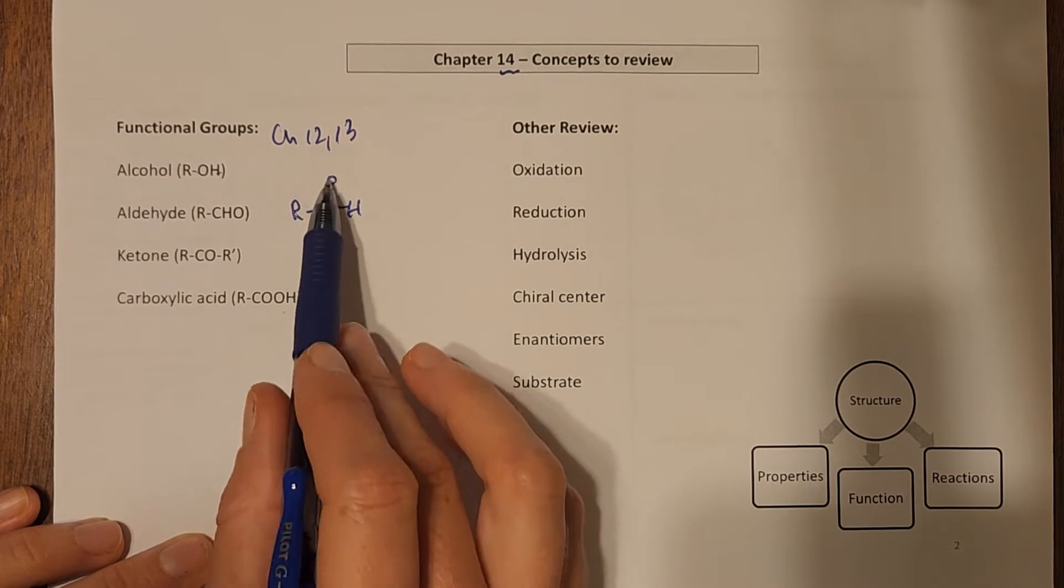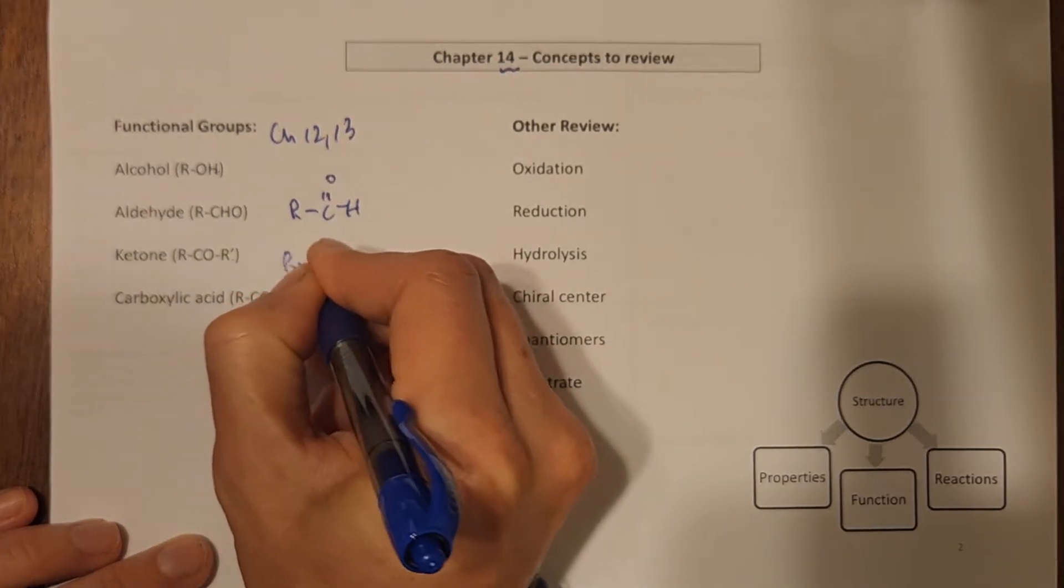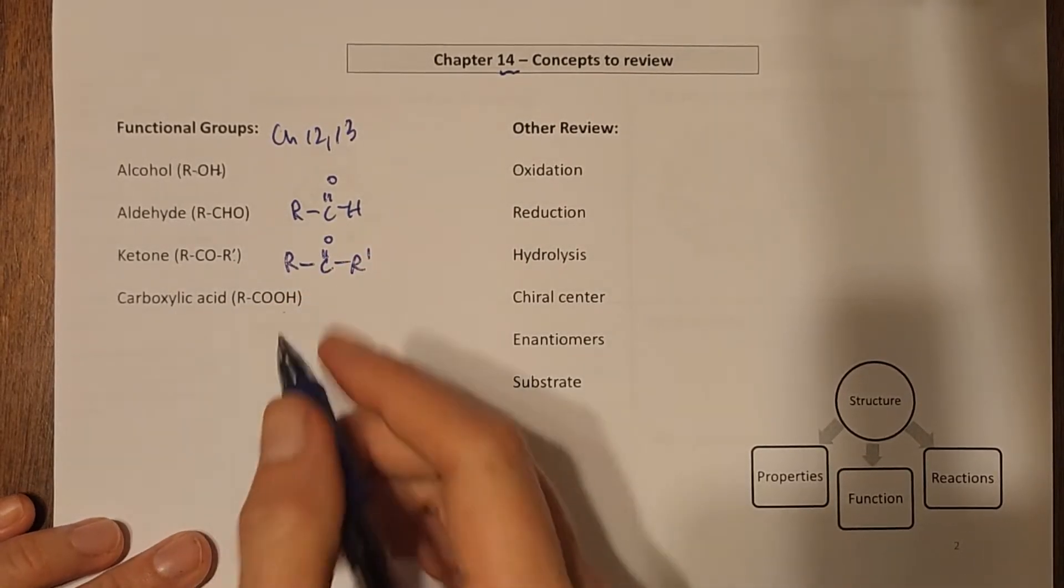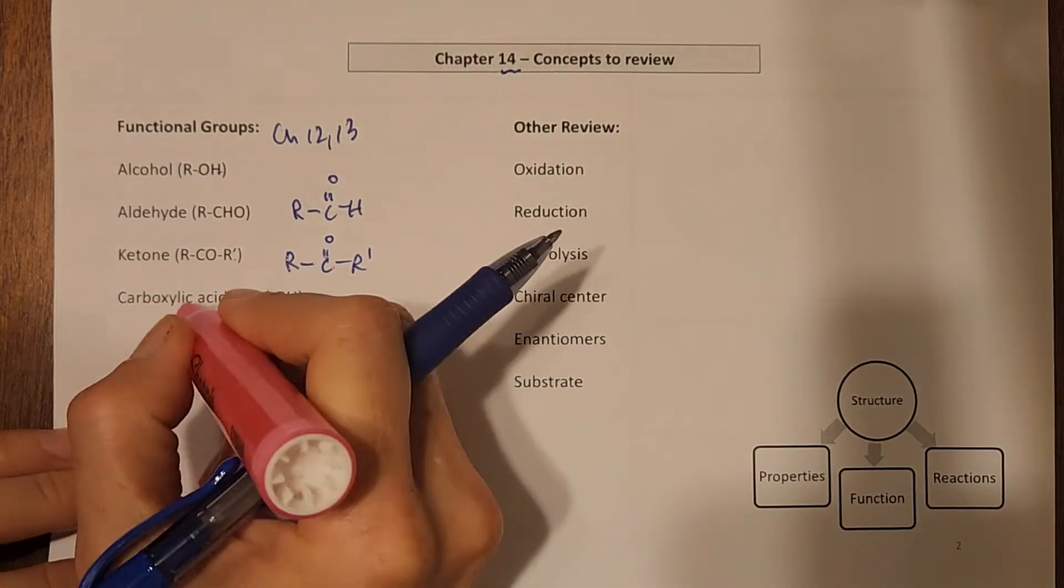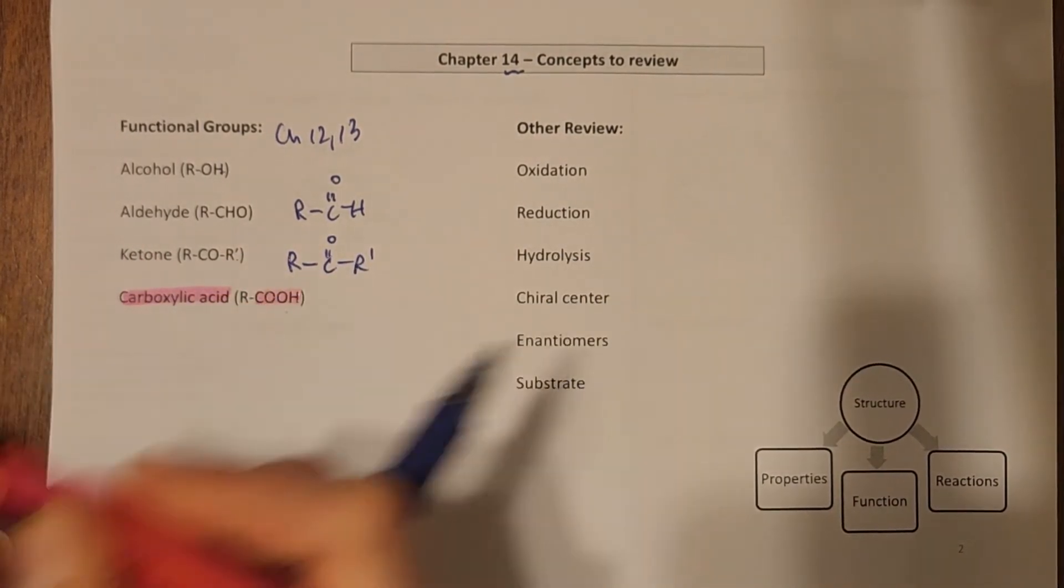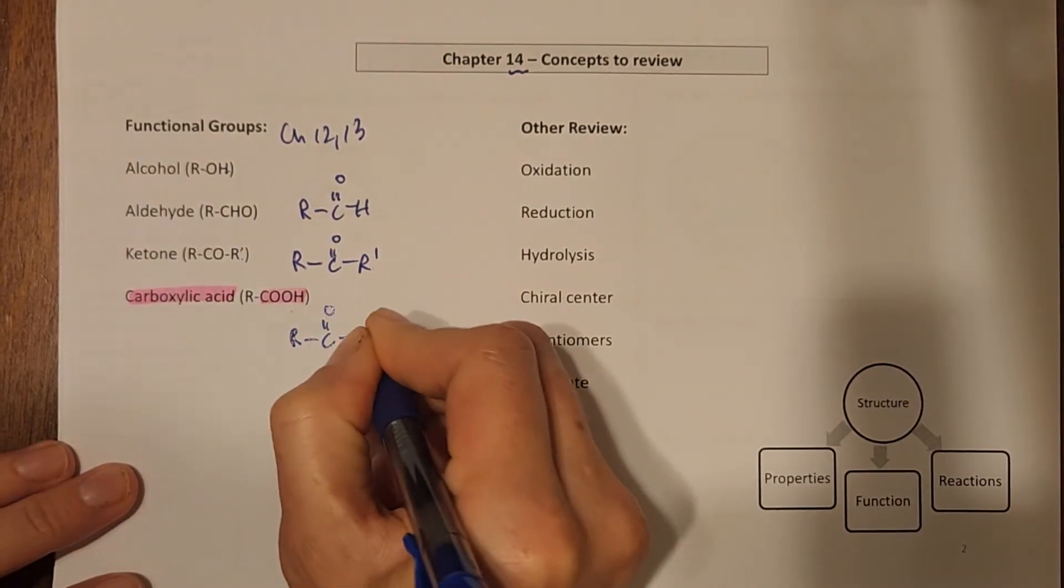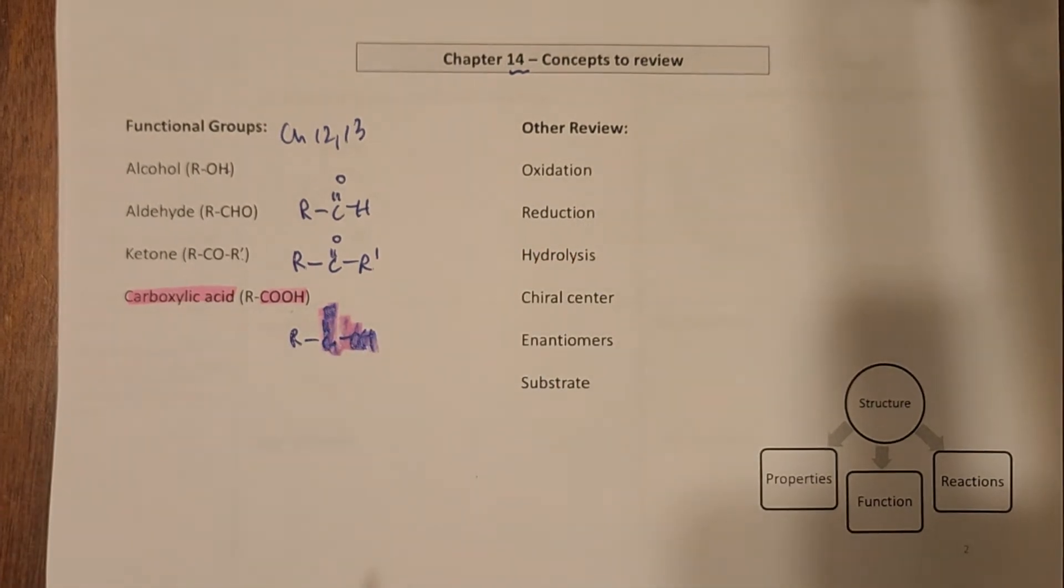Ketones have that same carbonyl C double bond O, but it's between two carbon groups, so it's going to look like that. And then finally, carboxylic acids we've been seeing those for really the whole semester. Those carboxylic acids, we're looking for the COOH, or if it's expanded out, it looks something like that. Be familiar with those functional groups.